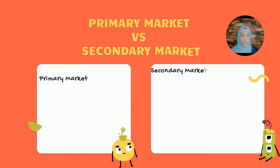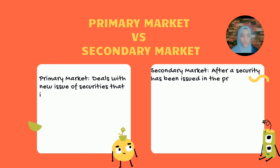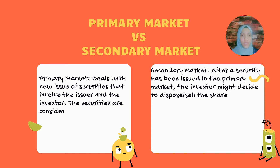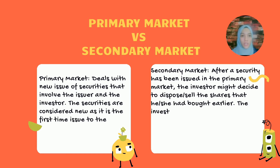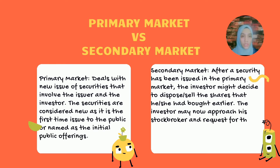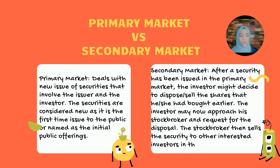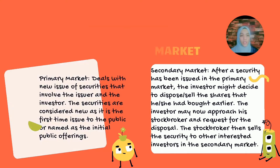Primary market versus secondary market. Primary market deals with new issues of securities that involve the issuer and the investor. The securities are considered new as it is the first issue to the public, also known as the initial public offering. Secondary market is where, after a security has been issued in the primary market, the investor might decide to dispose of or sell the shares they had bought earlier. The investor may approach their stock broker and request for the disposal. The stock broker sells the security to other interested investors in the secondary market.